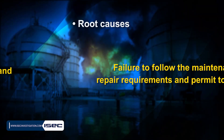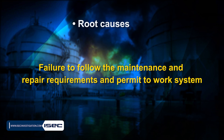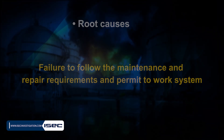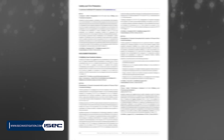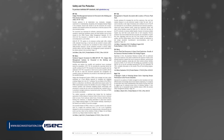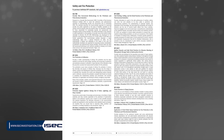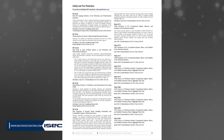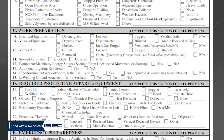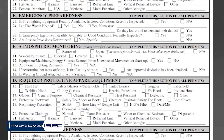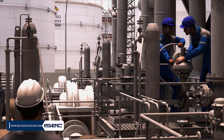Failure to follow maintenance and repair requirements and the permit to work system. For any repair work, an instruction must be prepared according to the risks involved, and the presence of the repair manager is required for inspection and safe operation. According to the mechanical insulation instructions, the standard blind flange should be fully bolted. A work permit had been issued for replacing the electric motor of pump C with a manual gearbox, but at the time of the work, the gearbox of pump A was removed without any work permit.